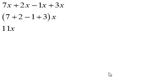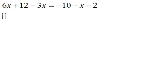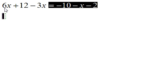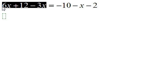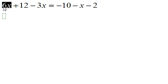So I'm going to have 11x, and that's how you simplify this expression. Now the next problem is an equation. What you're going to do is first simplify or combine like terms on the left side of the equation. On the left side, 6x and 3x are alike because they have the same variable x.